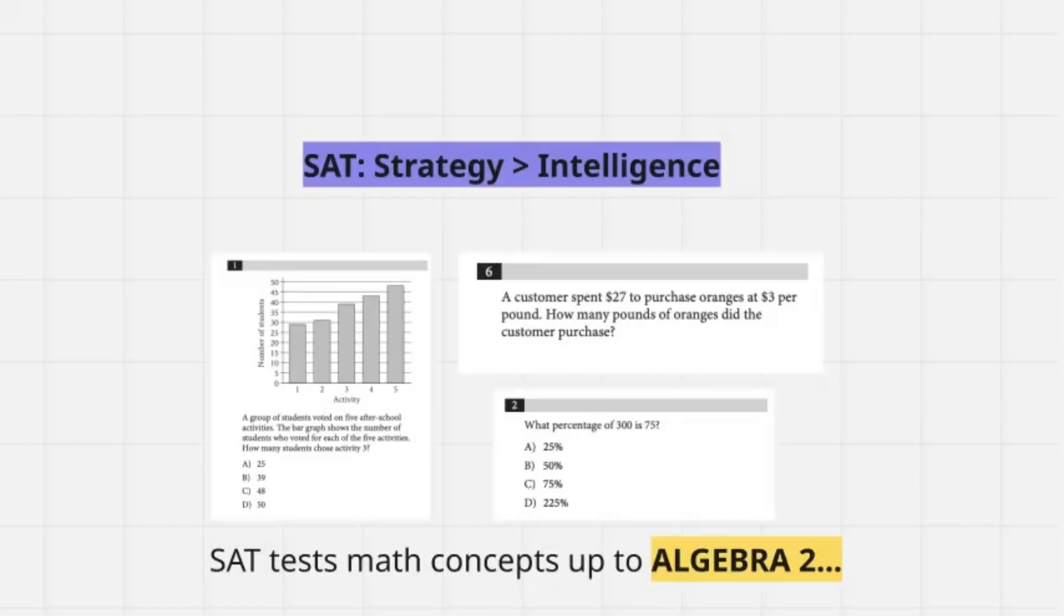Another thing to understand on the SAT is that your strategy approaching it is 100% more important than just your existing knowledge or intelligence. You can have a student who is still in Algebra 2, hasn't even finished the course, and have them because they've done the preparation and know the types of questions the SAT asks, perform better than a kid who's taking Calculus BC. Pretty wild.